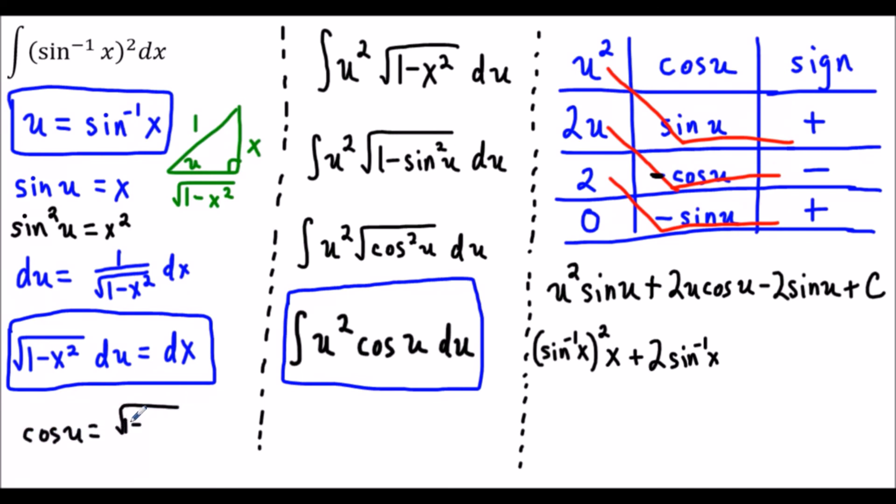We'll have 1 minus x squared under the radical over the hypotenuse 1. So cosine of u is just going to be radical 1 minus x squared. That's why the triangle comes in handy because it helps us in the end.